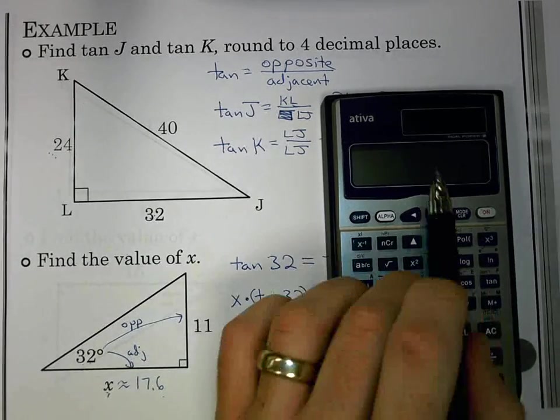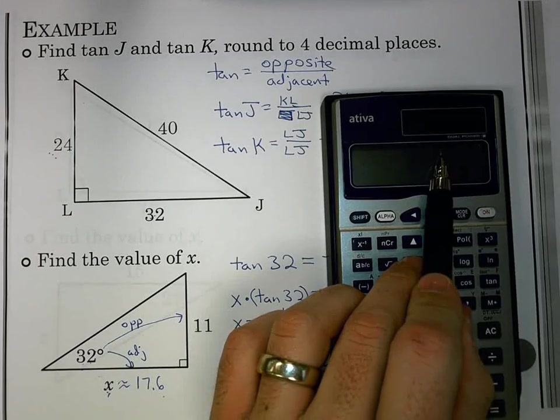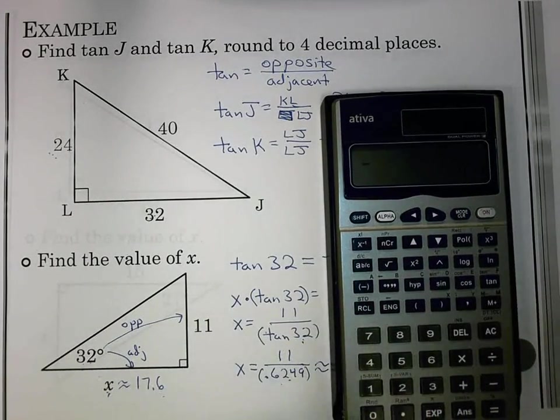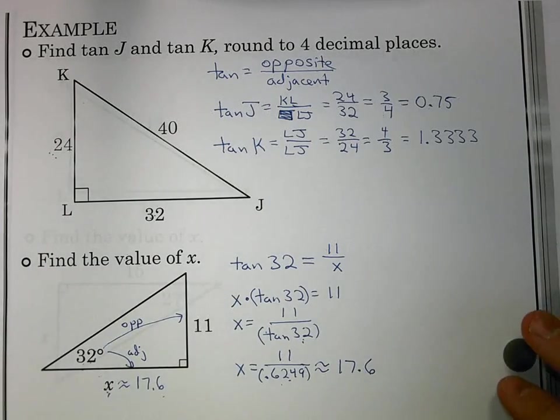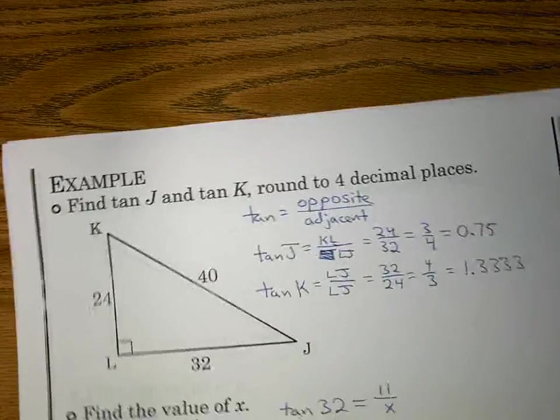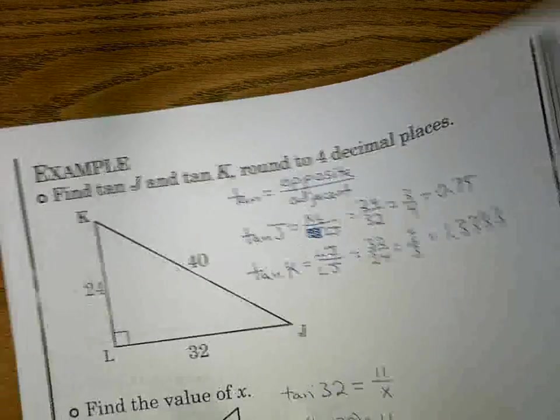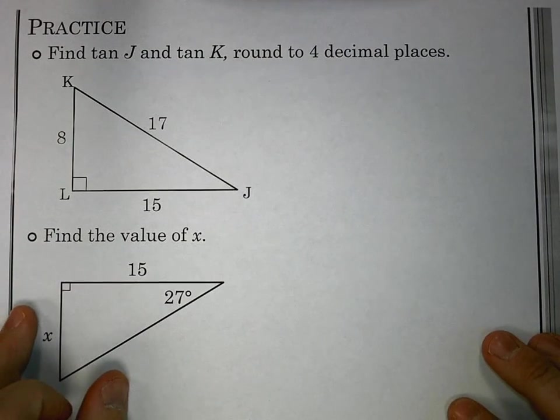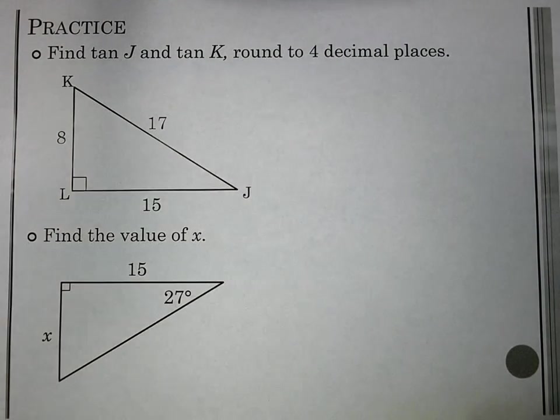Always make sure you're in degree mode. Up here I have a little D showing. I want to be in degree and not radian mode. You may have to go back and change those settings. Let's go forward and do a couple more examples. This would be a good time for, as I put these up, maybe you pause the video and you try them on your own.